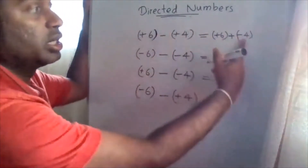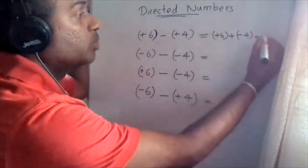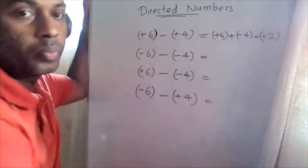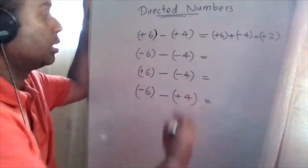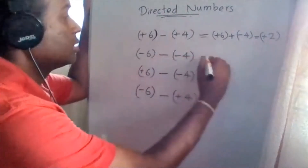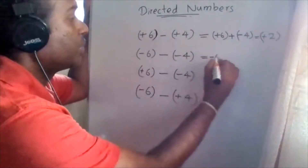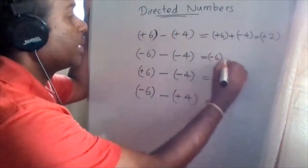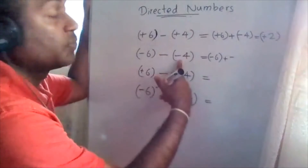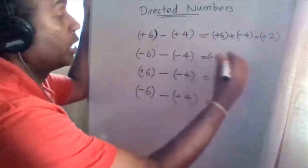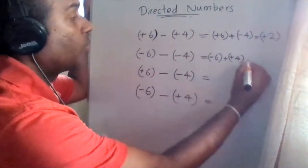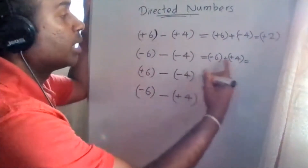Positive six addition negative four — the answer is positive two. Here the main operation is subtraction, so you have to convert it into addition by taking the additive inverse of negative four. The additive inverse of negative four is positive four.